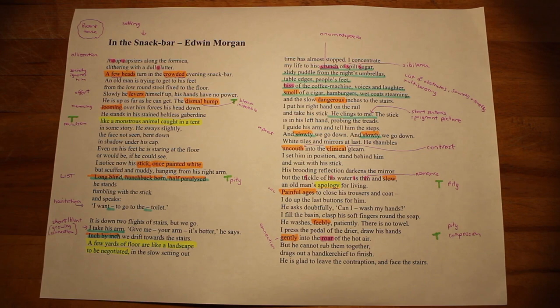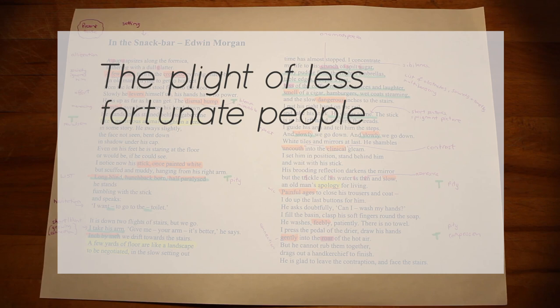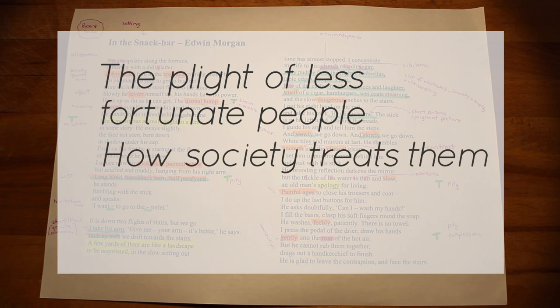Analyzing poetry involves identifying and dissecting the literary techniques that the poet uses effectively to explore the themes of a poem. In his poem In the Snack Bar, Edwin Morgan explores the themes of the plight of less fortunate people, the elderly, disabled or the vulnerable, how society treats these people, human connections and religion.